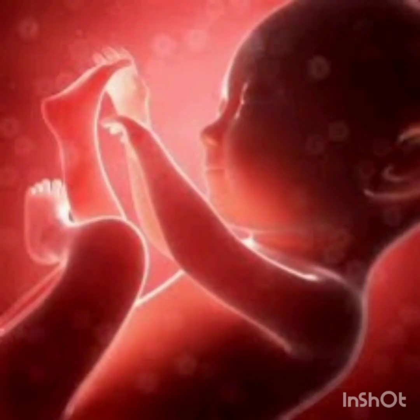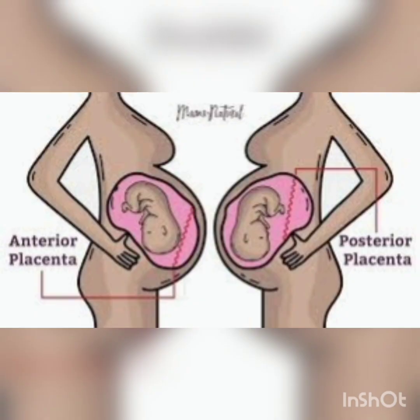The fifth month scan is normal. We will see placenta positions: posterior, anterior, low-lying placenta. Anterior is above, posterior is also above. We will see how the placenta position relates to these locations. There are several placenta positions to understand.